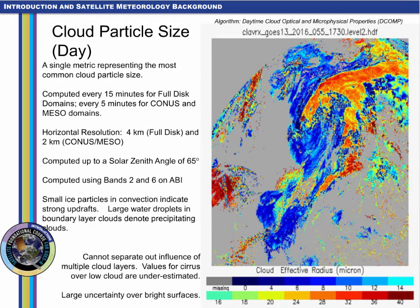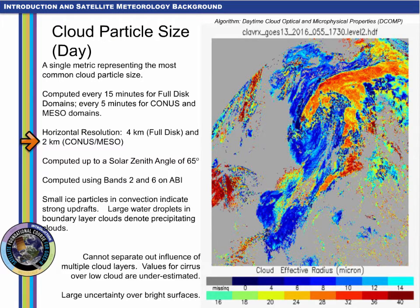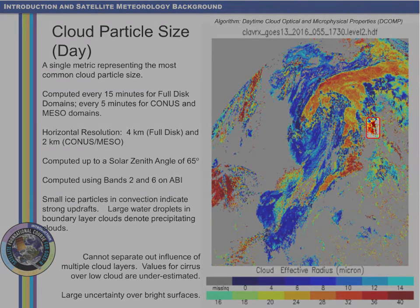Cloud particle size considers all pixels identified as cloud by the cloud mask and represents the cloud droplet distribution. This is a baseline product. This daytime-only product is computed for the full disk domain every 15 minutes at 4-kilometer resolution, and at CONUS and meso domains every 5 minutes at 2-kilometer resolution. It is computed using the visible channel band 2 at 0.64 microns and the cloud particle size channel band 6 at 2.2 microns. If you combine cloud particle size with cloud optical depth, you can estimate the cloud mass. Also, large water droplets in boundary layer clouds will likely be precipitating.